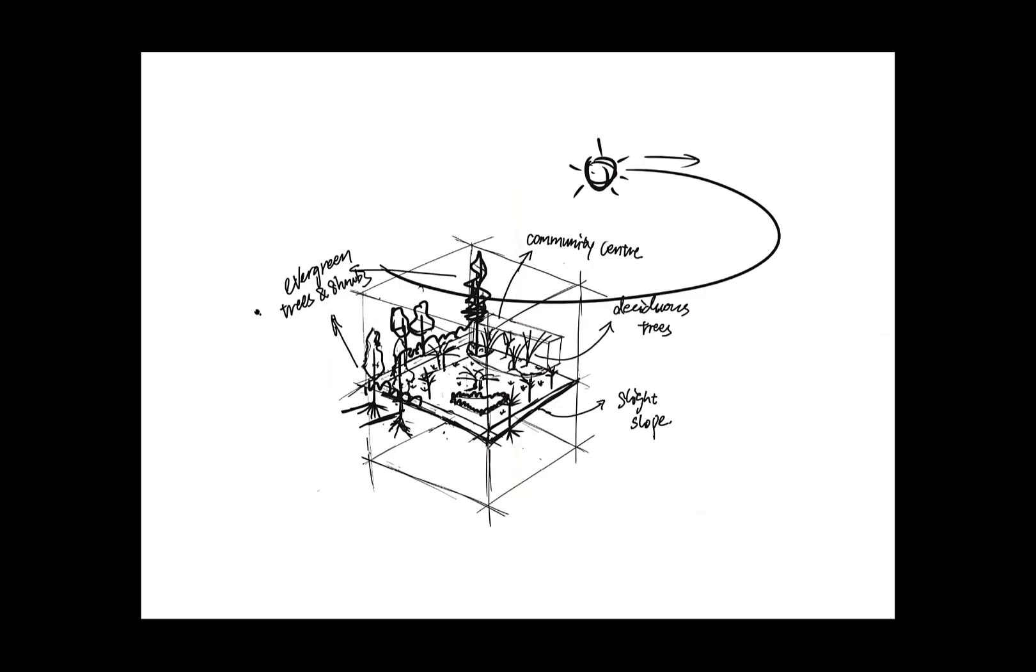During the site visit, I found the outer boundary was covered with evergreen trees and shrubs, while the inner area had mostly deciduous trees planted. There are several cherry blossom trees in the area which I wanted to include in my design when I first visited the site. This is the site context map I made after site visiting.